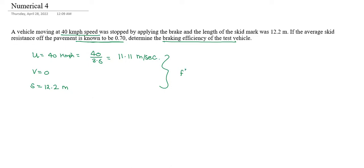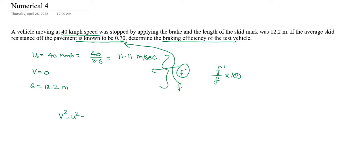We can represent braking efficiency as EF and EF'. We can do EF by EF' into 100 to find how efficient the braking is. For this data, using the kinematic equation V² minus U² equals 2As, where V equals 0 and U equals 11.11 m/s squared, equals 2 times A times s.